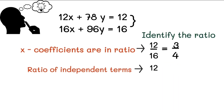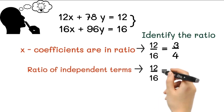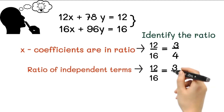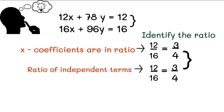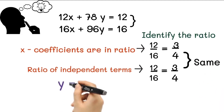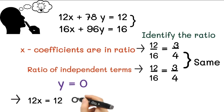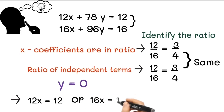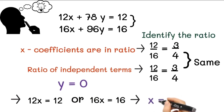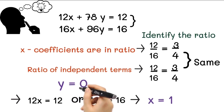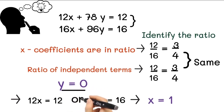Now take the ratio of independent terms: 12 upon 16, which is also 3 upon 4. You can observe that the ratio of x coefficients is equal to the ratio of independent terms. So we can equate the other variable y to zero. Putting y equals 0, we get 12x equals 12 or 16x equals 16, and hence x equals 1. This is the solution of the equations.